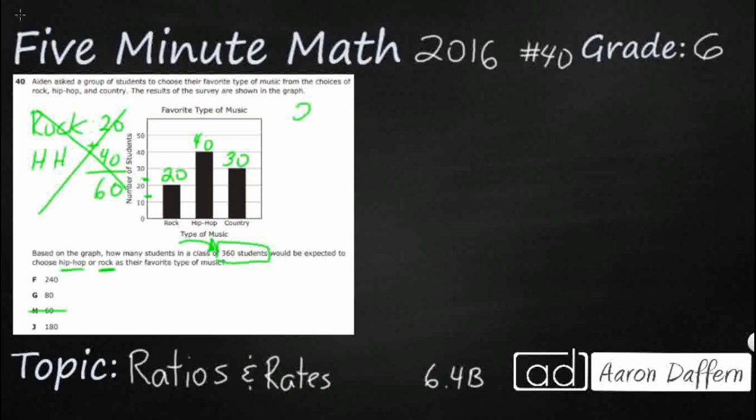I've got my 20, I've got my 40, and I've got my 30. So I have a total of, that is 90. So there are 90 total students here, represented in this particular graph.